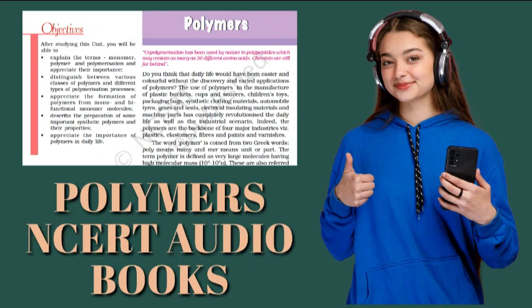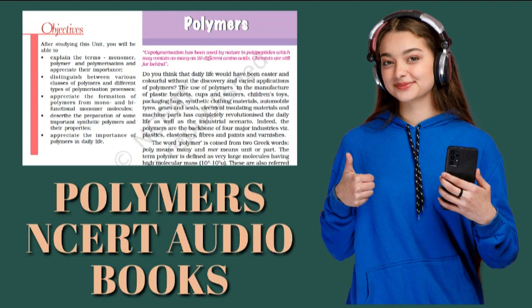Second, synthetic rubbers. Synthetic rubber is any vulcanizable rubber-like polymer which is capable of getting stretched to twice its length. However, it returns to its original shape and size as soon as the external stretching force is released. Thus, synthetic rubbers are either homopolymers of 1,3-butadiene derivatives or copolymers of 1,3-butadiene or its derivatives with another unsaturated monomer. Preparation of synthetic rubbers: First, neoprene. Neoprene or polychloroprene is formed by the free radical polymerization of chloroprene. It has superior resistance to vegetable and mineral oils. It is used for manufacturing conveyor belts, gaskets and hoses.